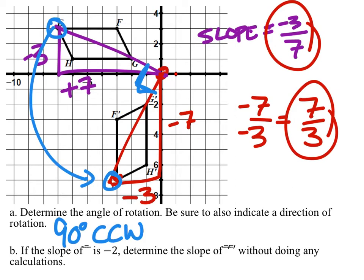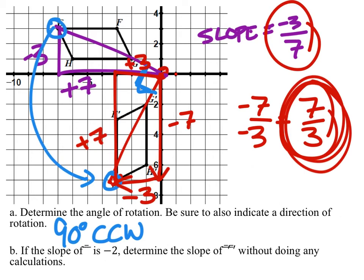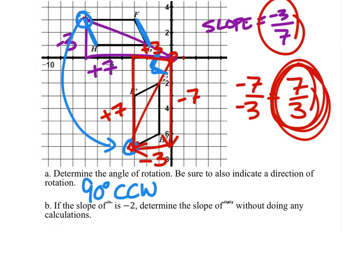If the slope of something is negative two — say that's FG — its corresponding line segment in the image should have an opposite reciprocal slope. Without doing any calculations, the opposite reciprocal of negative two is positive one-half.